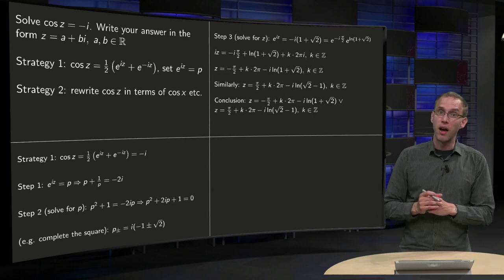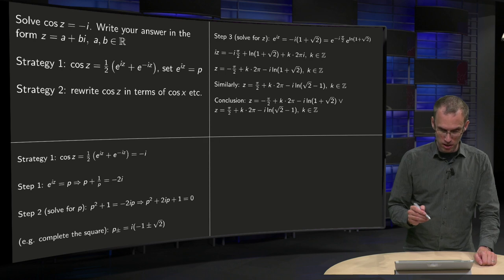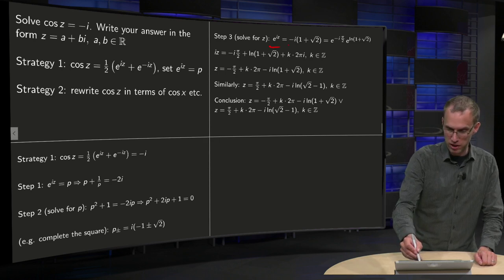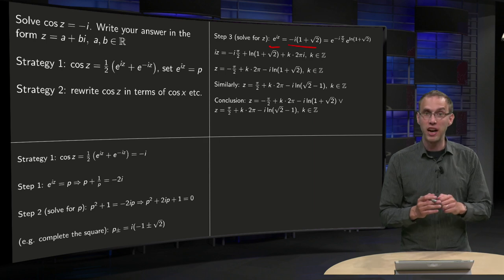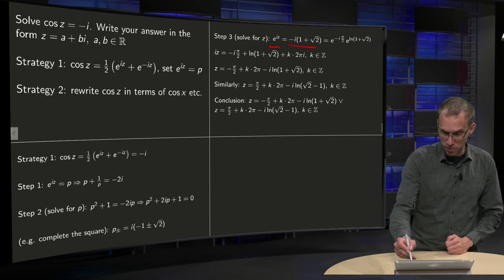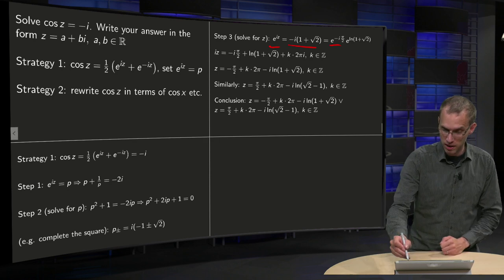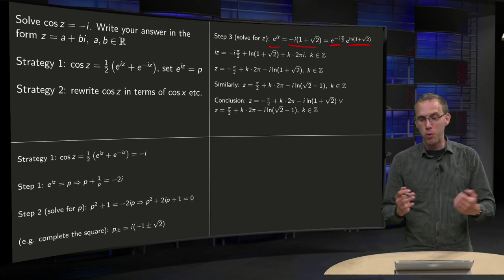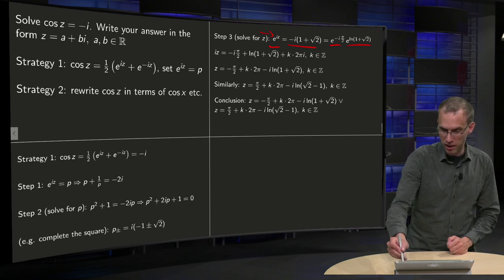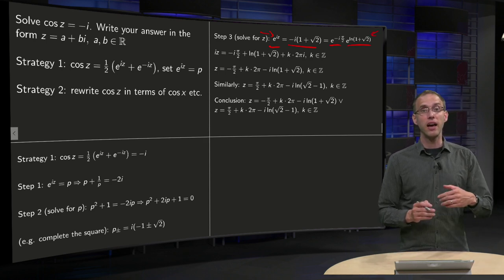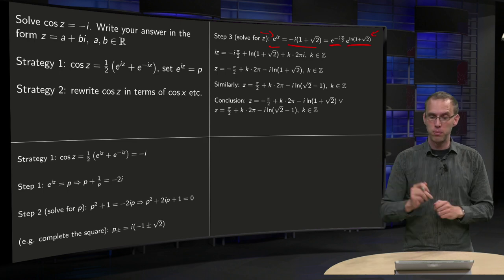Now we know what p is, but we still have to solve for z. Taking the plus sign first, we get e^(iz) equals minus i times (1 + √2). We can rewrite e^(-iπ/2) in polar form, and also write (1 + √2) as an exponential, namely e^(ln(1+√2)).